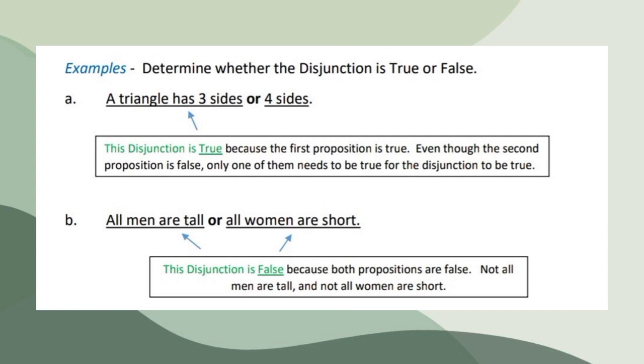Number two, all men are tall or all women are short. This disjunction is false because both propositions are false. Not all men are tall and not all women are short.